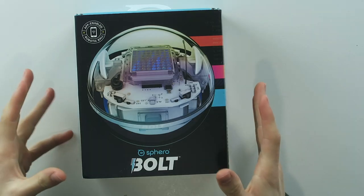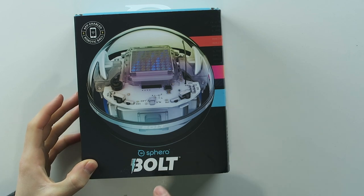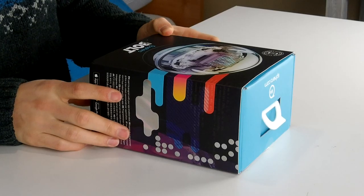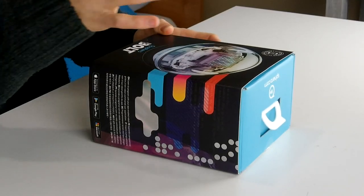So in front of me I have a robotic ball that's app-enabled. This is the Sphero Bolt. I also reviewed the Sphero Mini, which was a lot of fun. That was with my phone, a mini ball that you have to control with your phone, which is very cool.